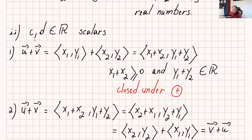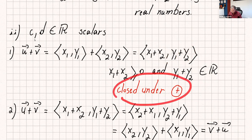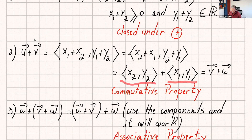u plus v equals (x1 + x2, y1 + y2). If x1 is a positive number and x2 is a positive number, then x1 plus x2 will be greater than or equal to zero, and the sum of two real numbers is again a real number. So it is closed under vector addition. For the commutative property, u plus v equals (x1 + x2, y1 + y2), and since adding numbers is commutative, this equals (x2 + x1, y2 + y1), which is v plus u. So the commutative property works.